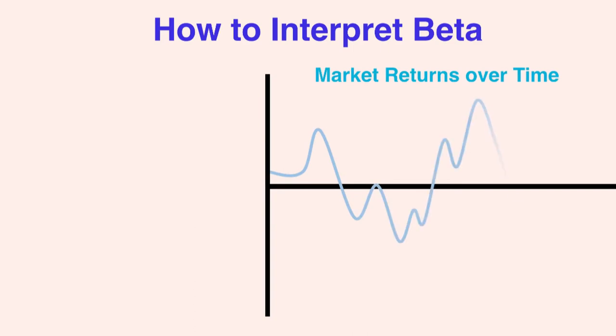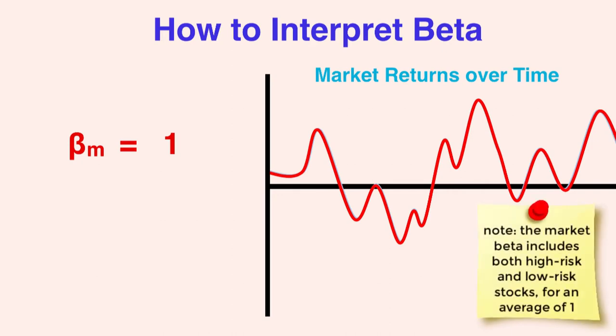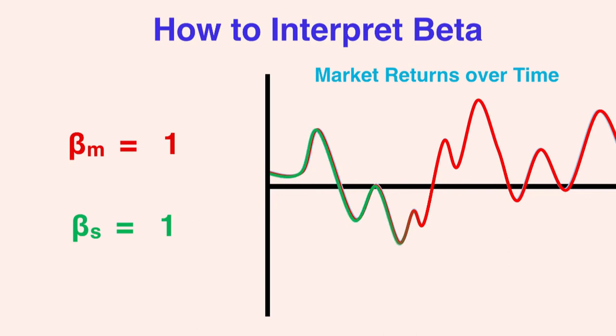The market portfolio has a beta of 1. If the market portfolio represents all the assets in the market, then the market portfolio moves exactly in pace with itself, and hence the beta of 1. So when an asset has a beta of 1, it means the stock or portfolio's returns moves exactly like the market for a given change in the market.